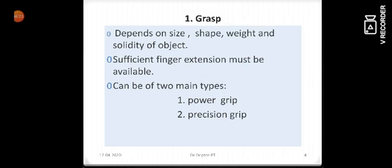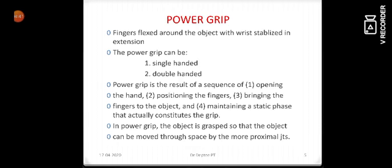First important function is the grasp. Grasp depends on the size, shape, weight and solidity of the object. The fingers are very important functional organs of the grasp. Grasp could be power grip or precision grip.